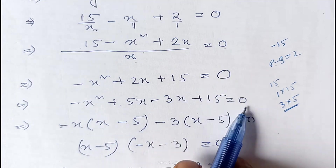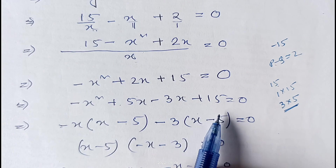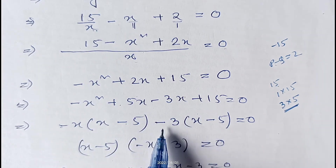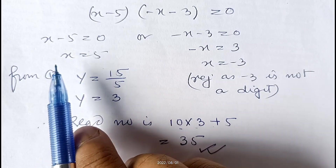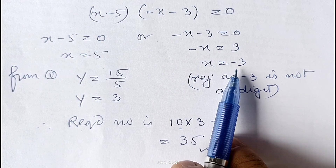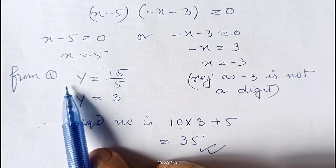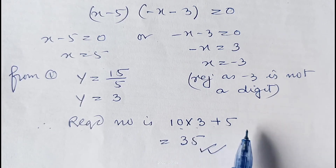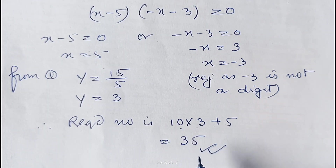Writing −2x as 5x − 3x: −x² + 5x − 3x + 15 = 0. Taking −x common from first two: −x(x − 5); taking −3 common from last two: −3(x − 5). So (x − 5)(−x − 3) = 0. Either x = 5 or x = −3. Since −3 is not a digit, we reject it and take x = 5. From equation 1, y = 15/x = 15/5 = 3. Therefore the required number is 10y + x = 10(3) + 5 = 35. This is the last sum from this exercise.